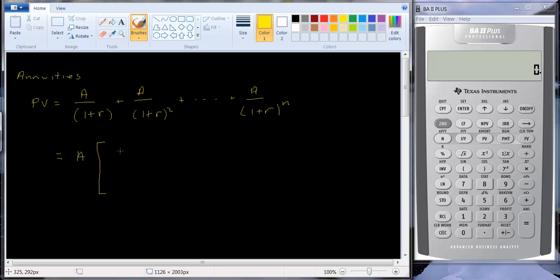And we get 1 over 1 plus R, plus 1 over 1 plus R squared, all the way out for as many periods as we have. Notice that this term in the brackets is independent of the A. So this annuity factor, as we sometimes call it, this is the present value annuity factor. There's also one for a future value, but the present value annuity factor is independent of the size of the annuity.